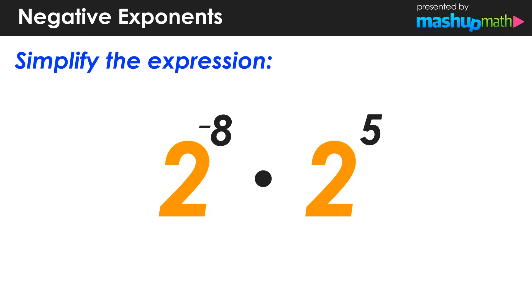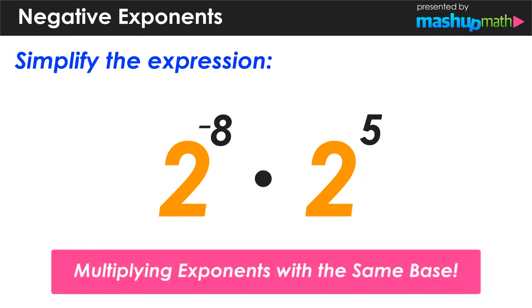So now we can apply our understanding of negative exponents to an example where we want to simplify the expression 2 to the negative 8 power multiplied by 2 to the positive 5 power.